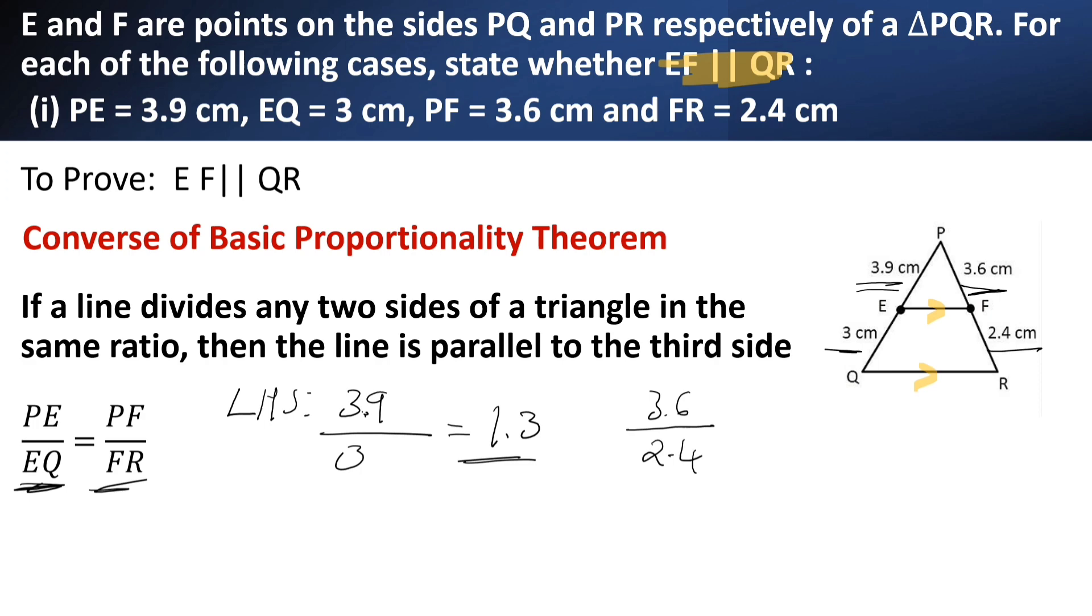Here also, no need to remove the decimal places. 3.6 divided by 2.4, that is equal to 1.5. So LHS is not equal to RHS. So EF is not parallel to QR.